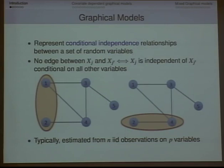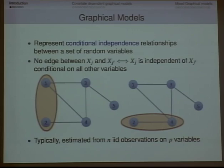Let me start with a brief introduction to graphical models, just in case the non-statistical people are not quite familiar with the terminology. There are different types of graphical models; I'm going to focus on the type that represents conditional independence relationships between a set of variables. In this toy graph, if there is no edge between variables one and two, that means they are conditionally independent given three, four, and five — given everything else. I'm not going to go into directional graphical models or attempt to infer anything causal; this is just undirected association.